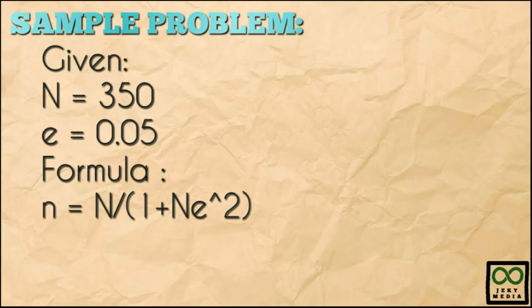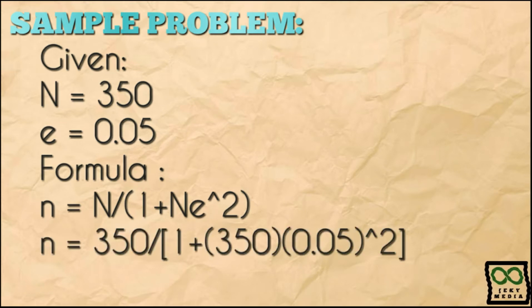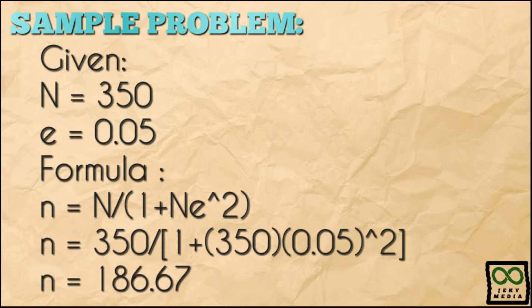Now, let's input the values to the Slovin's formula. Sample size equals population size over 1 plus population size times margin of error squared. Inputting values will give you: sample size equals 350 over 1 plus 350 times 0.05 squared. Calculating, the result is 186.67. Round up the result to the nearest whole number. The result is 187.